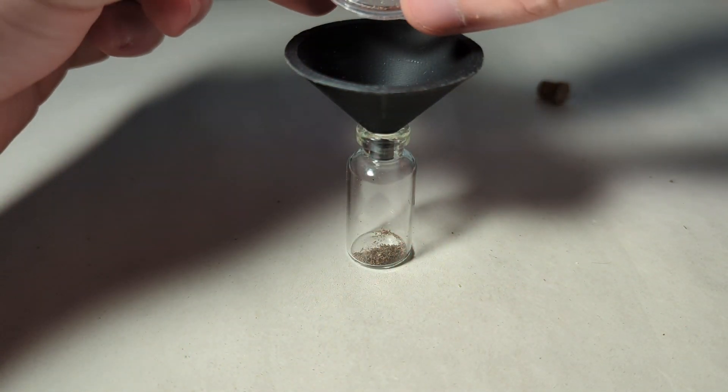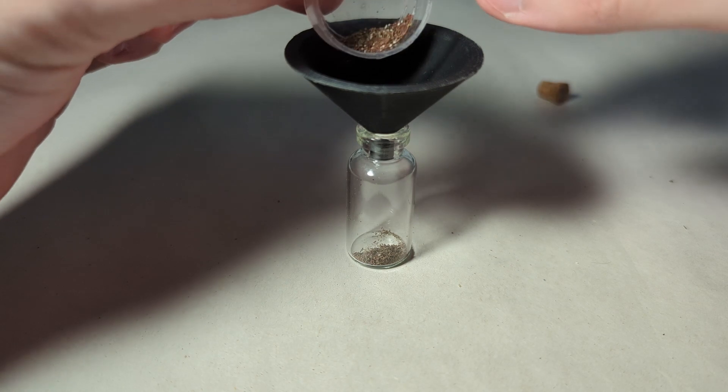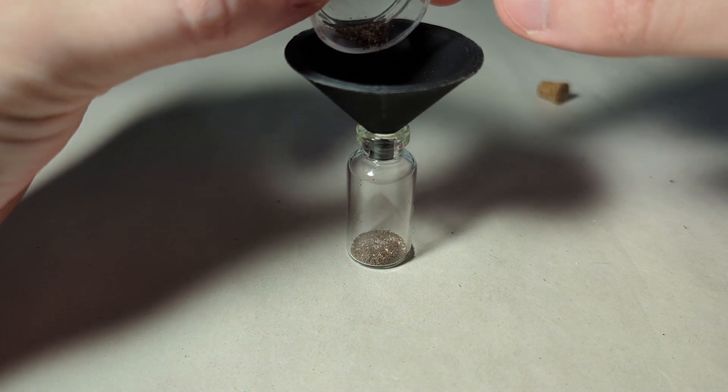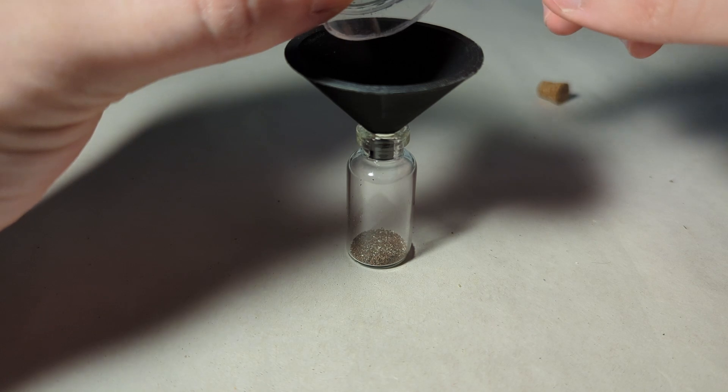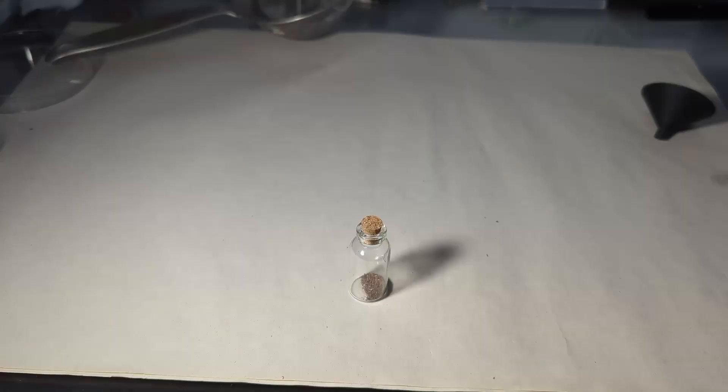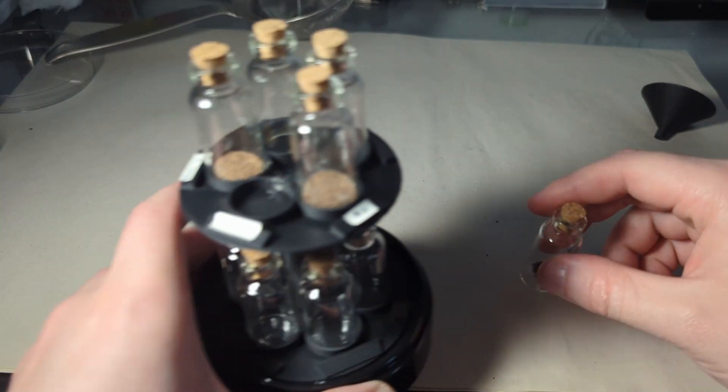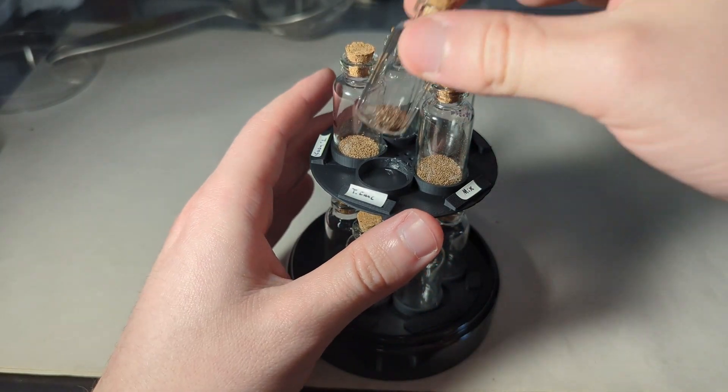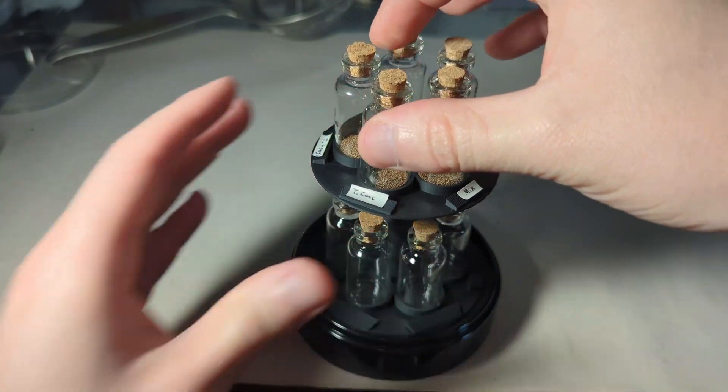This species in particular is Triops cancriformis, but this will work for pretty much any Triops or fairy shrimp or even sea monkey species. And then once that's done, I just put them right where I store them in my small triops egg container that I made.